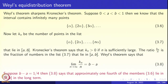Now let us go to Weyl's equidistribution theorem, which sharpens Kronecker's theorem. Suppose you take two numbers a and b with 0 < a < b < 1. We know the open interval (a, b) contains infinitely many points of sequence 3.6. Let k_n be the number of points among the first n that lie in (a, b). What can you say about the ratio k_n / n? Kronecker's theorem only tells you k_n is positive for sufficiently large n; it says nothing about whether k_n / n has a limit. Weyl's theorem says k_n / n converges to b minus a.